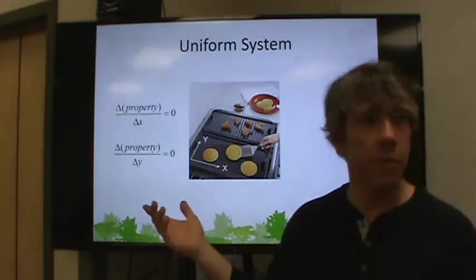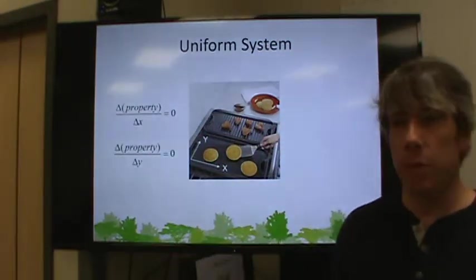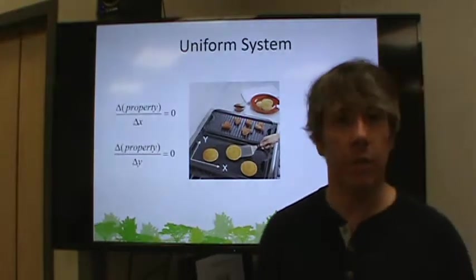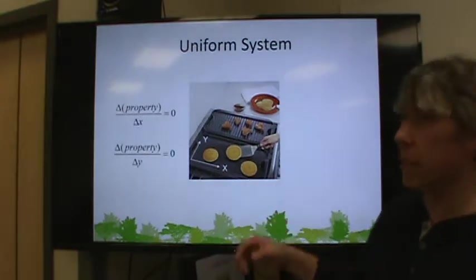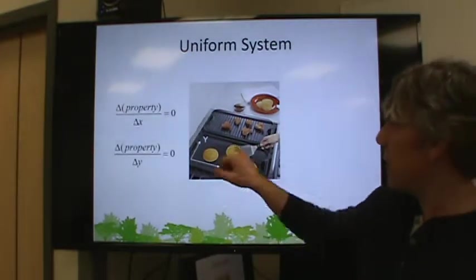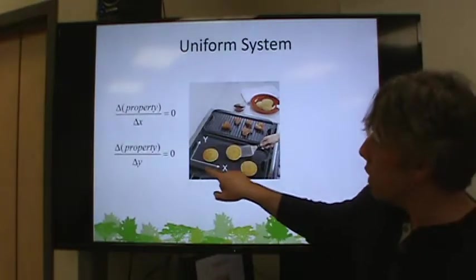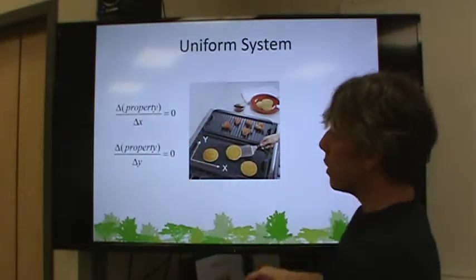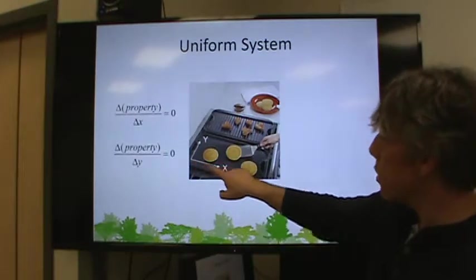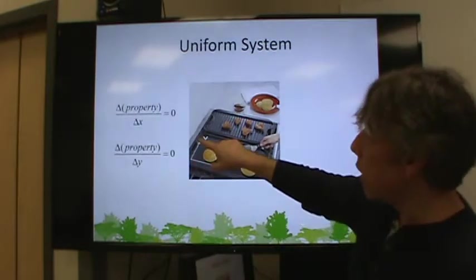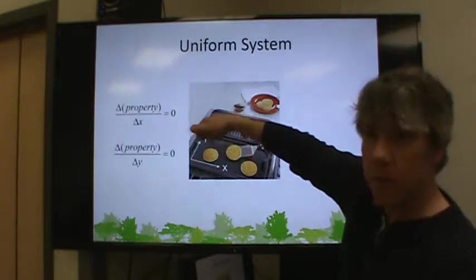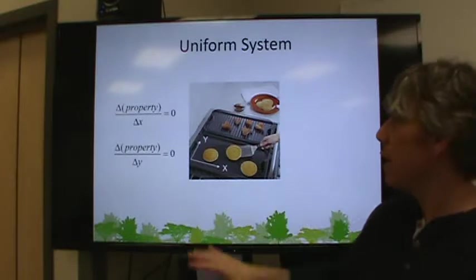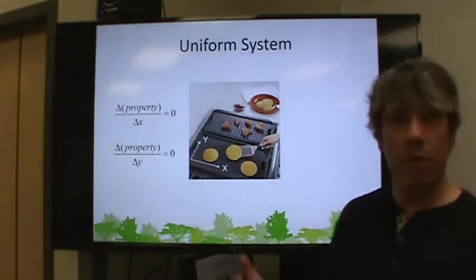But when I got one of these griddles, it was amazing. You can imagine this system as having a Cartesian coordinate on it. So you've got changes in x position and changes in y. And no matter where I pointed my thermometer, what I found was the same temperature. Exactly the same temperature. Nice, uniform. So this is a uniform system.